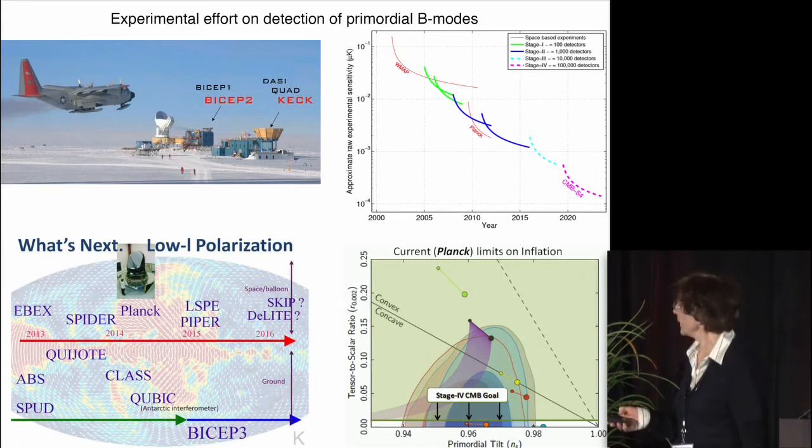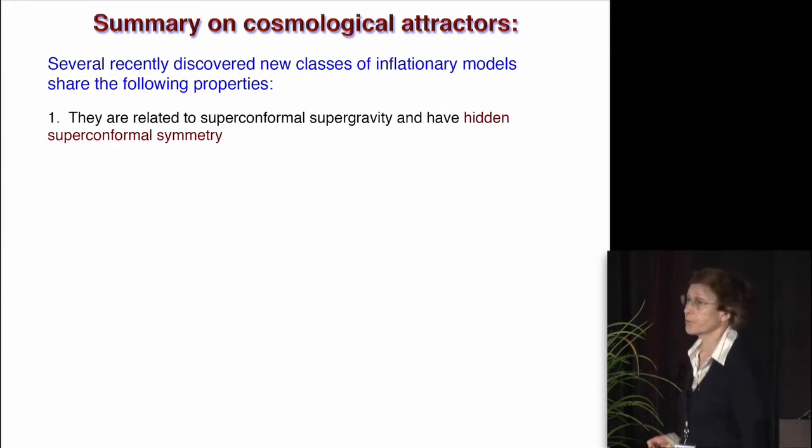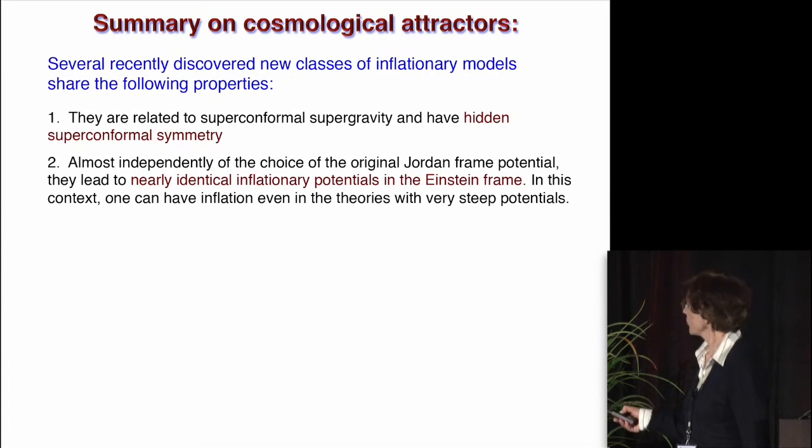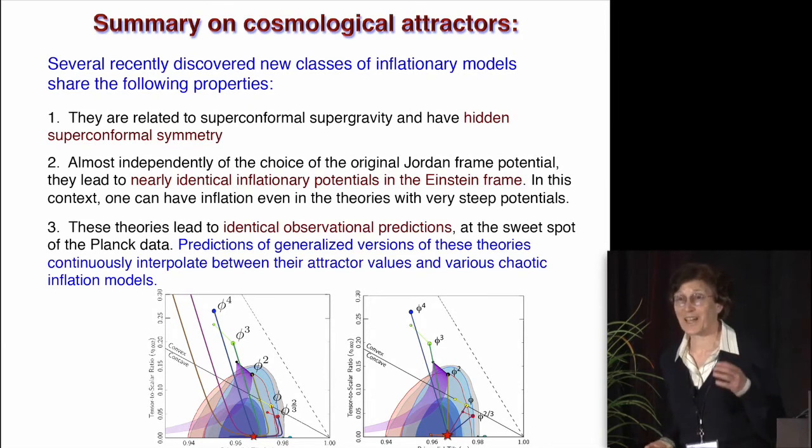So let me give you a summary on the cosmological attractor story, which I was trying to present. That there are several recently discovered models, and they're all related to superconformal supergravity, and they typically have extremely elegant versions of these models. Almost independently of the choice of the original Jordan frame potential, they lead to nearly identical inflationary potential when you go to Einstein frame. In this context, we can have inflation even if we started in Jordan frame with rather steep potentials. And these theories, they lead to identical cosmological prediction. And this by itself is not so fantastic, but the fact they are precisely going in the sweet spot of Planck data, this is rather interesting.